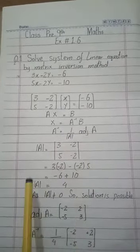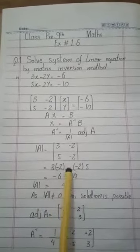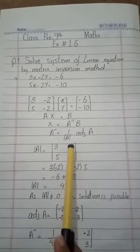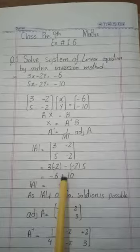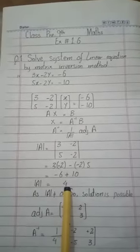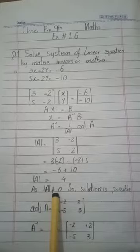The determinant is the product of diagonal entries: 3 multiplied by minus 2, minus the product of non-diagonal entries: minus 2 multiplied by 5. That's minus 6 minus minus 10, which gives us minus 6 plus 10 equals 4. You can see the determinant is not equal to 0, so it's a non-singular matrix and a solution is possible.